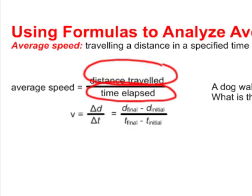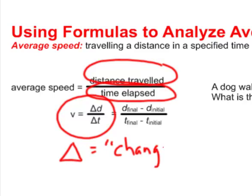A simpler way to write that would be to say velocity is equal to delta d divided by delta t, where the symbol delta is a Greek symbol that means change in something. So we mean the change in distance divided by the change in time.